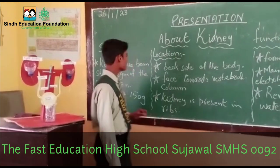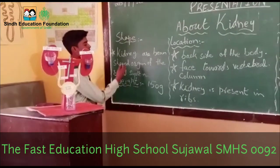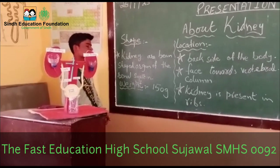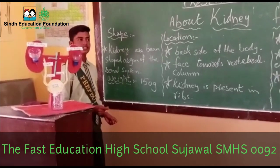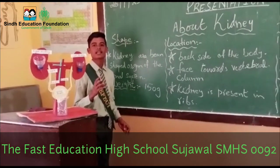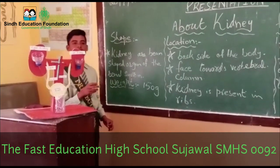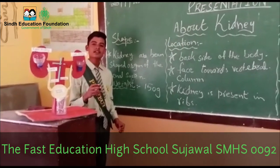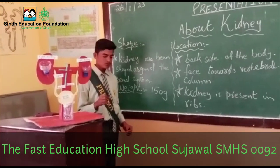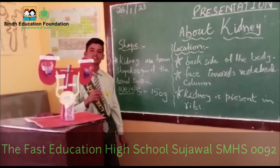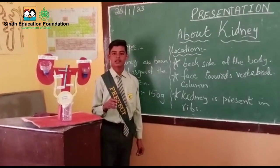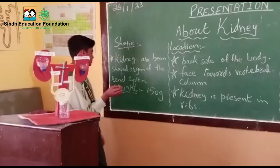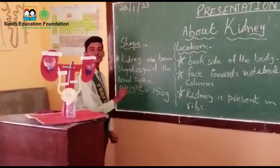We will talk about kidney-shaped organs of the renal system. The size of the kidney is 11cm long and 6cm wide, 3cm thick, and the weight of the kidney is 150g.